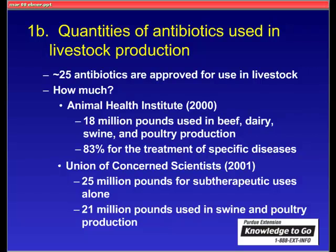On the other side of the spectrum is the estimation from the Union of Consumer Scientists from 2001. They estimate that close to 25 million pounds of antibiotics are used for subtherapeutic uses alone, and that 21 million pounds are used in swine and poultry production alone.